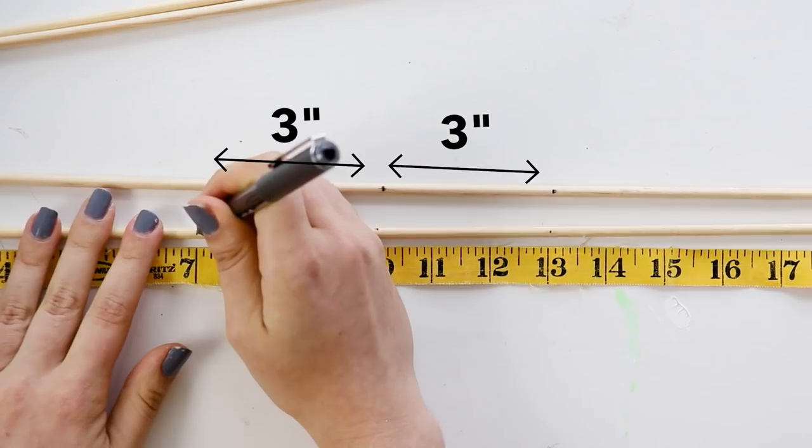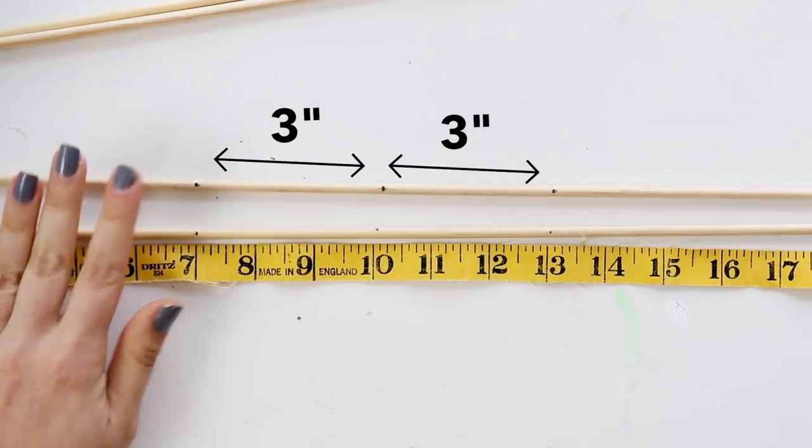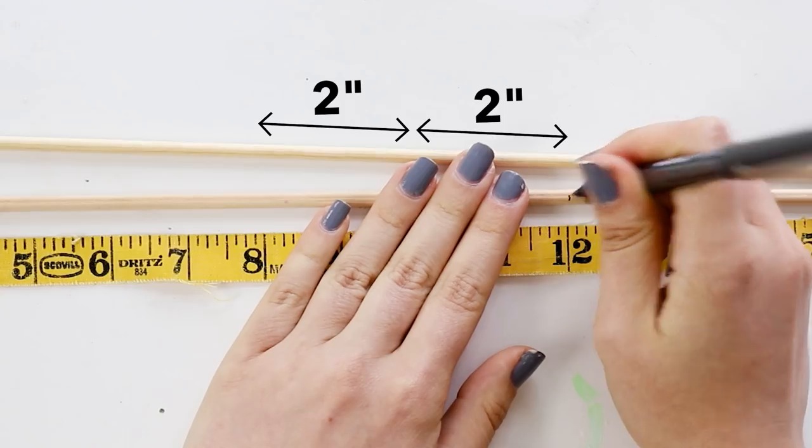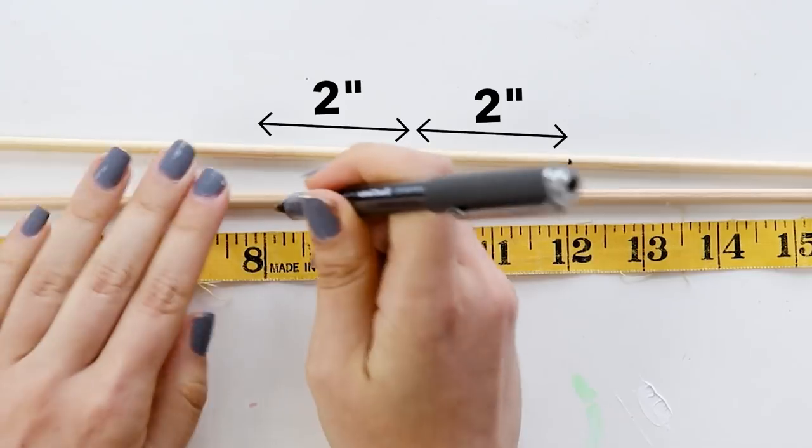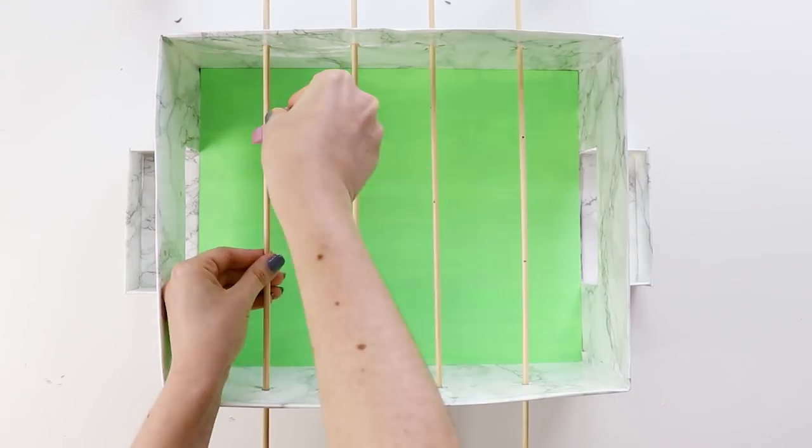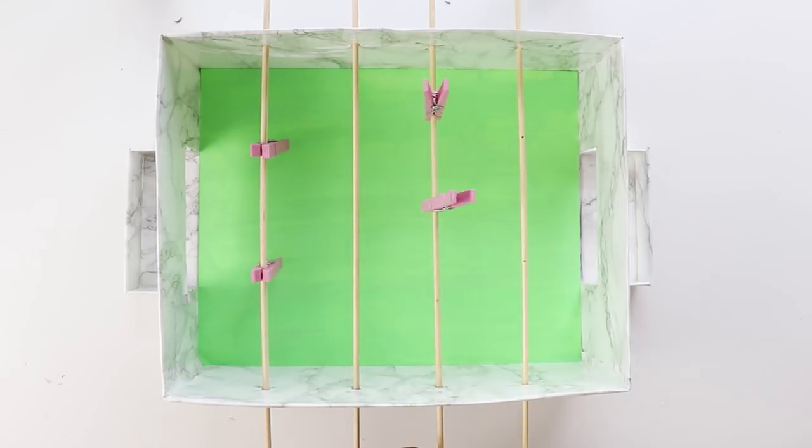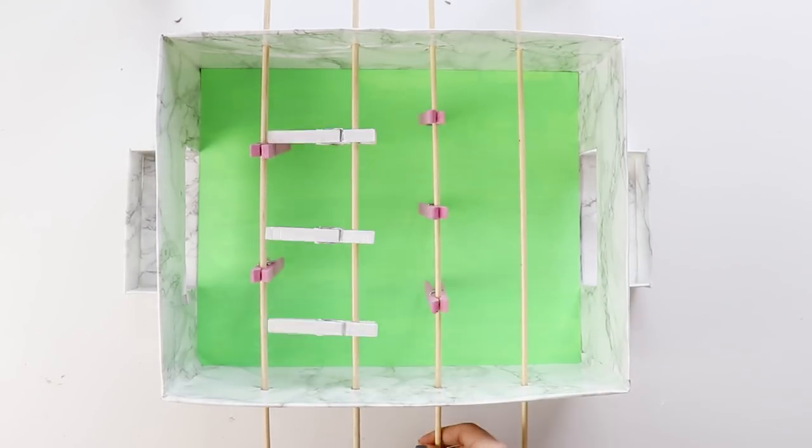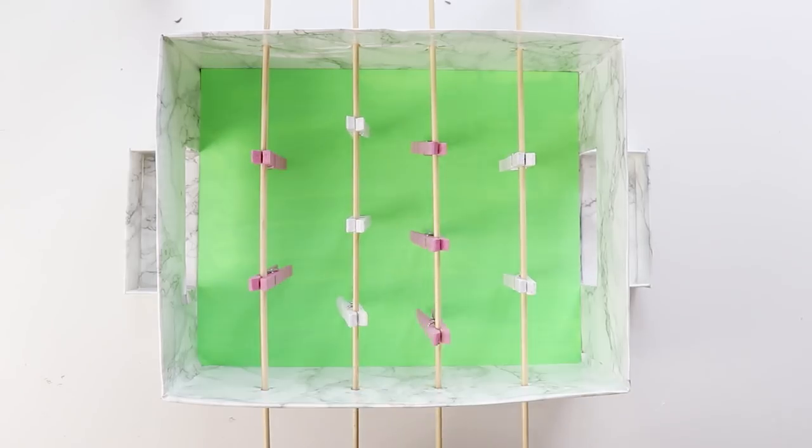Now for two of them, mark the halfway point and then three inches out from either side. And for the other two, mark two inches out from either side of the halfway point. This is where your clothespins will go, so put the dowels into the box and clip on your clothespins where you made those marks.